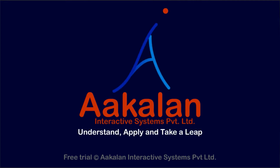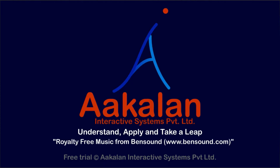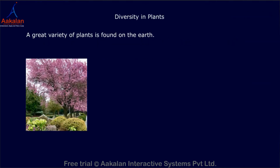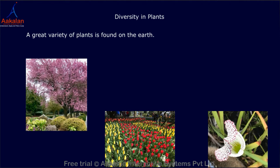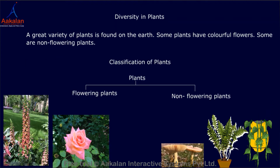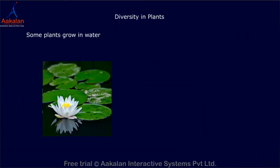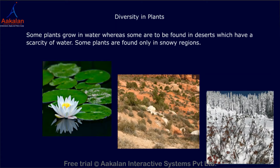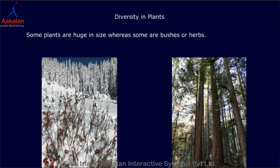The Living World: Adaptation of living things. A great variety of plants is found on the earth. Some plants have colourful flowers. Some plants grow in water, whereas some are found in deserts which have a scarcity of water. Some plants are found only in snowy regions. Some plants cannot be seen without a microscope, whereas some are huge in size.